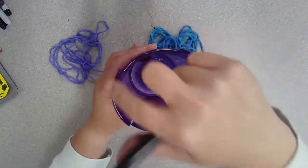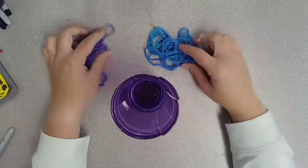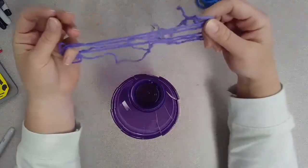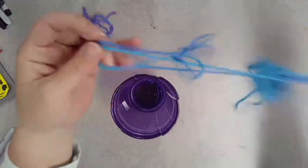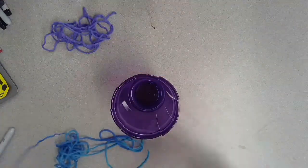Pick a section and put your yarn that you're going to use first inside that section. Doesn't matter which slot you choose, just stick the color of yarn you want to use first all the way down to the bottom of that slot.